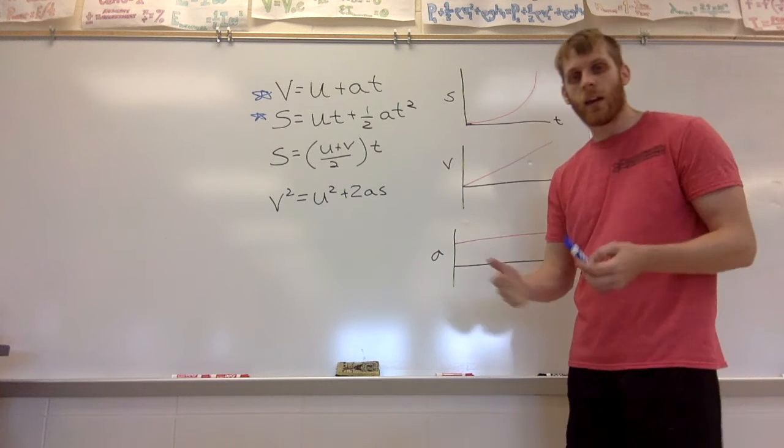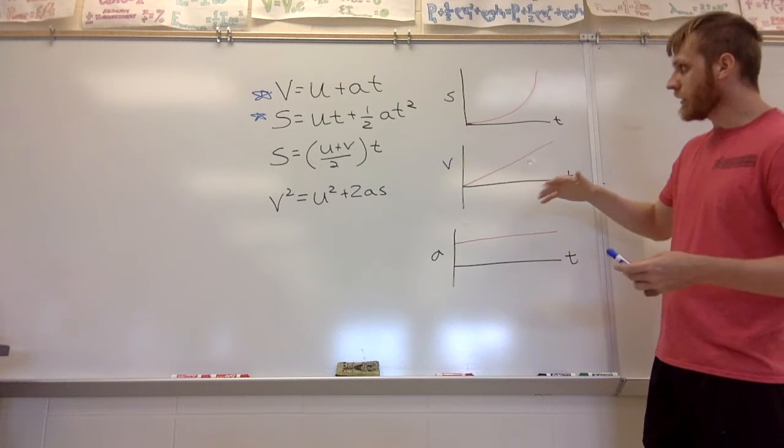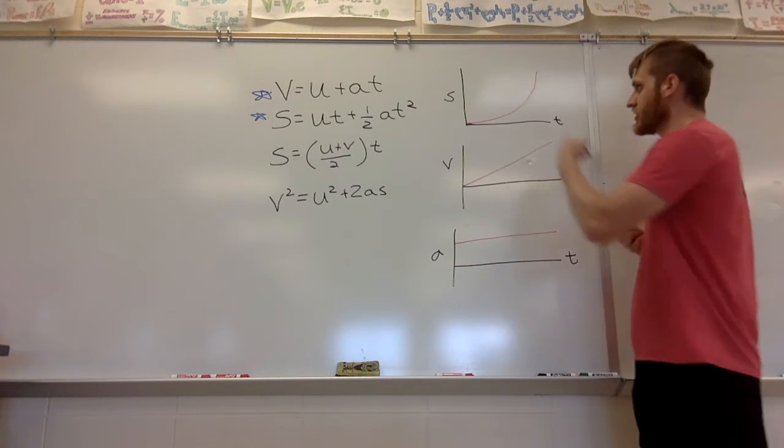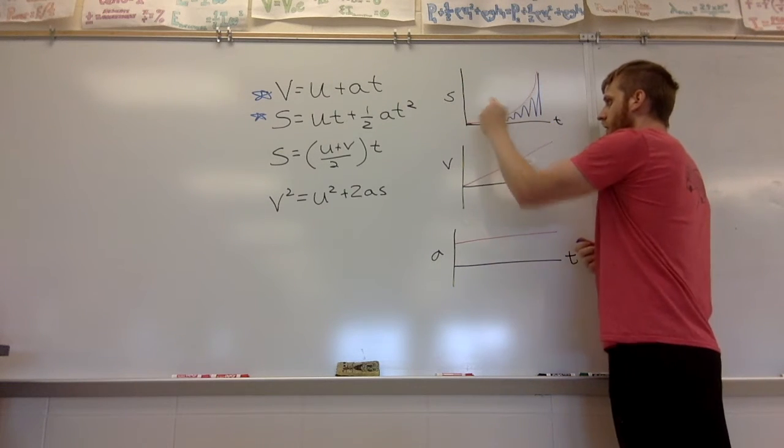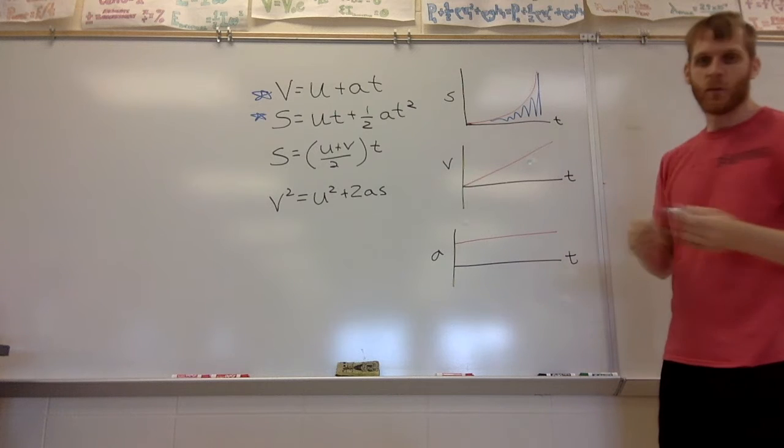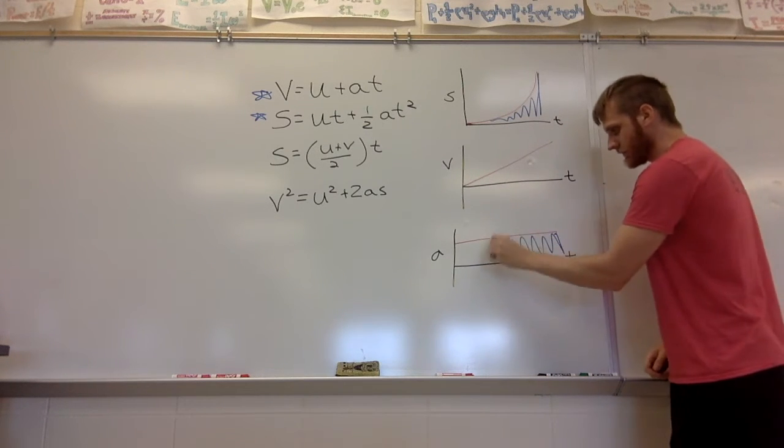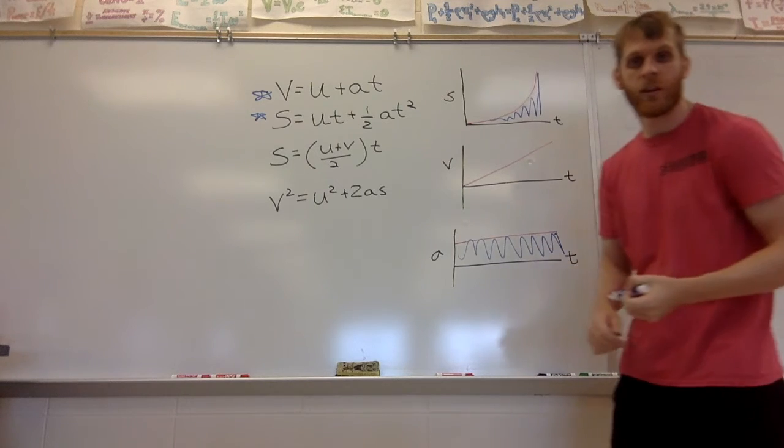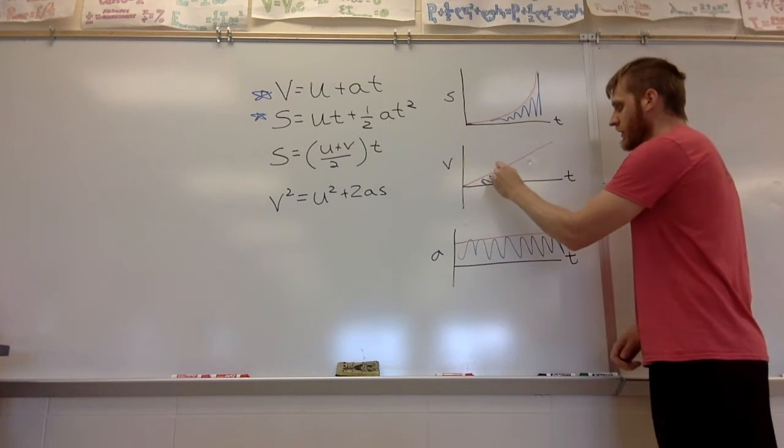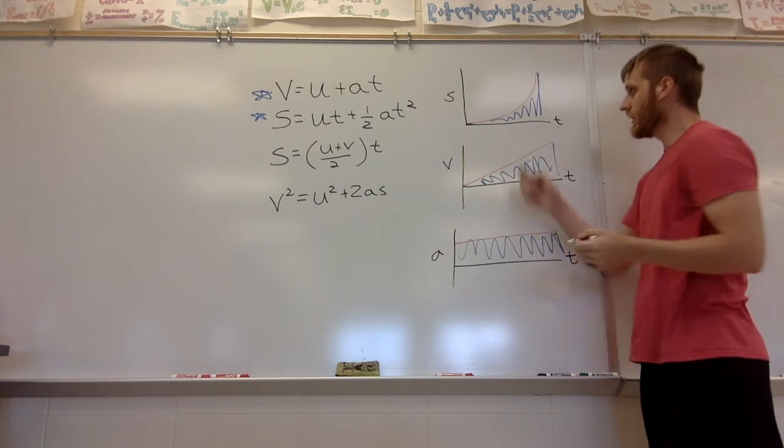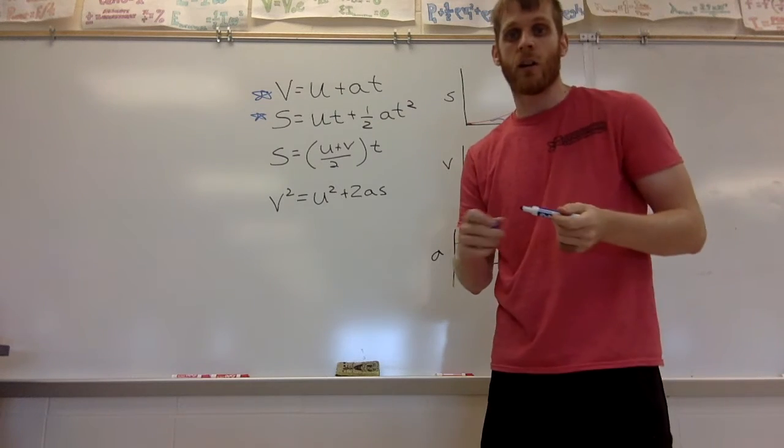And the reverse of that, if I want to find the area under this graph... Sorry, if I were to find the area of this graph, that tells me the velocity that it traveled at that point. If I were to find the area of this graph, it tells me the displacement, how far it traveled.